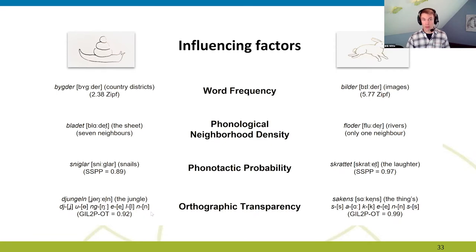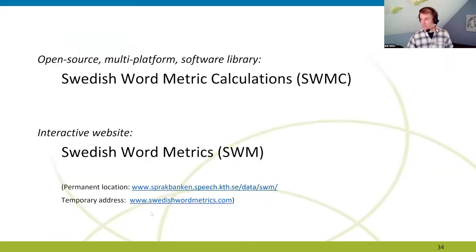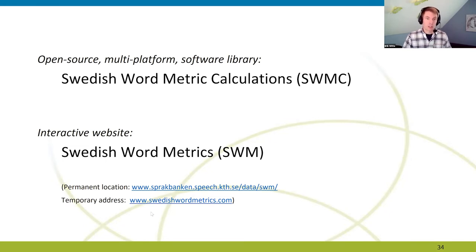In 2019, the lexical database AFC List, containing around 800,000 Swedish words with spellings, phonetic transcriptions, and frequency of occurrence was published. Based on this data, Witte and Köbler developed algorithms to calculate many different psycholinguistic metrics, including the ones mentioned. In the current study, these algorithms have been implemented in a multi-platform software library called Swedish Word Metric Calculations, and in a web interface called Swedish Word Metrics, both available through the Språkbanken of Sweden.